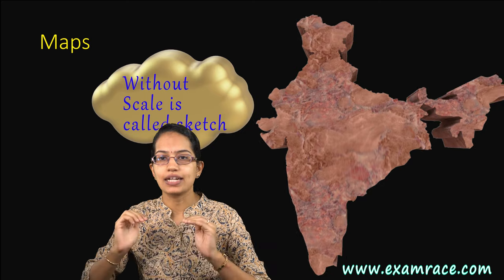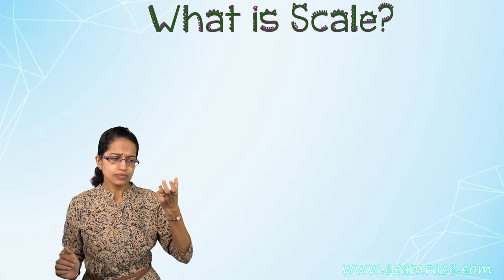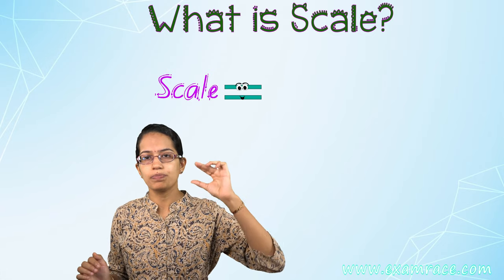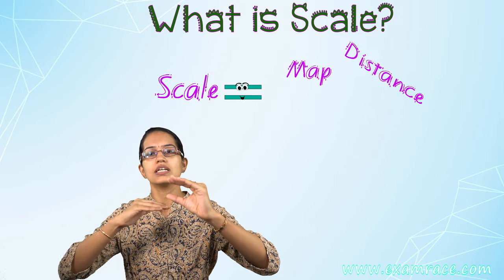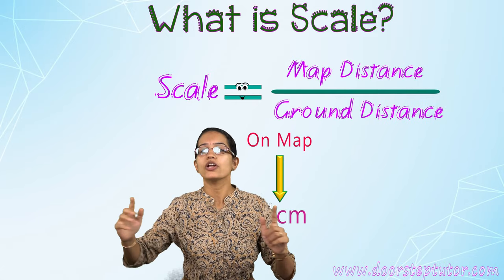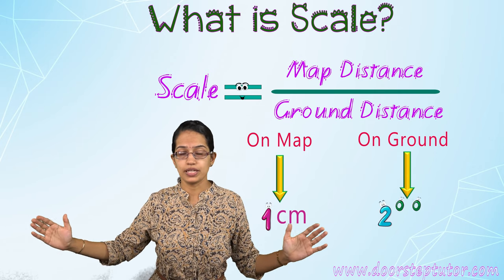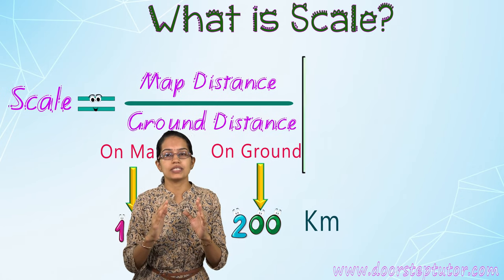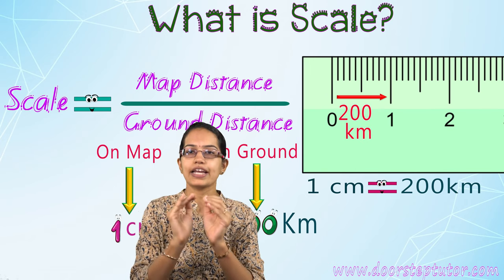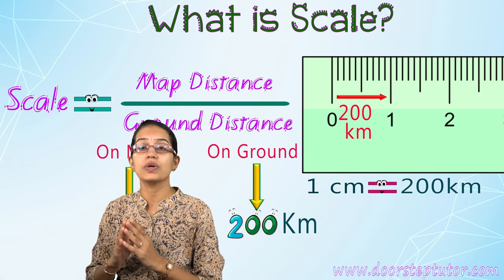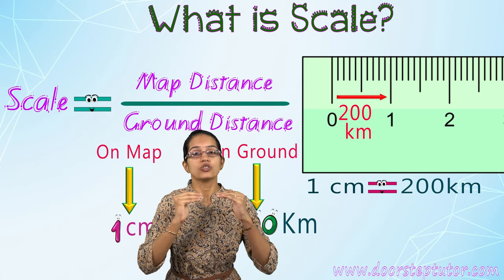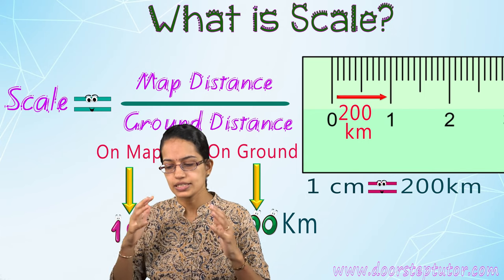Now understanding the difference — what is a scale? Scale simply means the map distance divided by the ground distance. So let's say on map it's one centimeter and on ground it is 200 kilometers. I am representing that one centimeter equals 200 kilometers. I can do it by statement, by representative fraction — all that we will study in the next class.